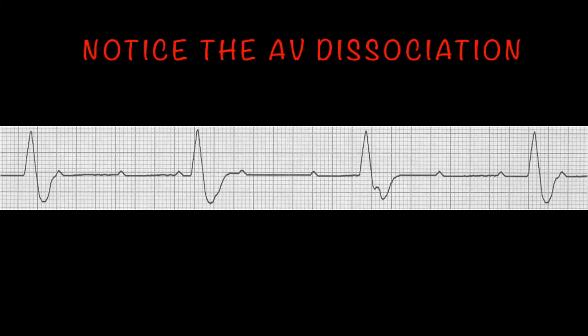Looking at it on a strip, I want you to really notice the AV disassociation. That is one characteristic about a complete heart block that you can distinguish it from a second degree type 2. There is regularity between the P waves and between the QRS complexes — they just have nothing to do with each other.